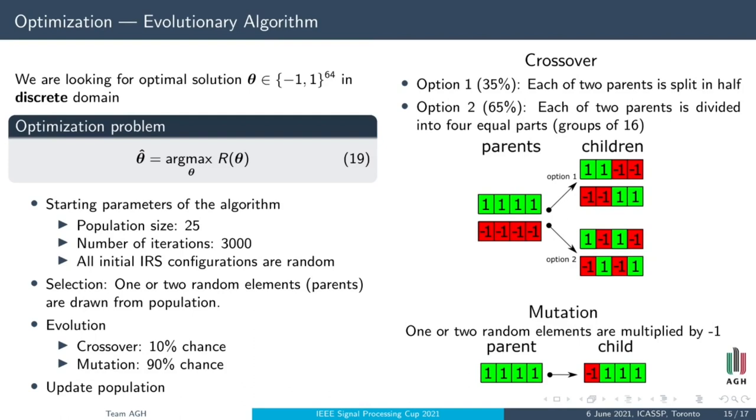Several processes take place during an iteration. Firstly, in a selection, we randomly pick one or two solutions called parents. Based on them, new solutions called children will be created. Secondly, we have evolution. It can be either crossover that needs two parents and occurs only 10% of the time, or mutation that needs one parent and occurs 90% of the time. The goal of crossover is to mix the solutions. It divides parents and combines them together in a different order. Here, 1 or negative 1 symbol represents the state of 16 columns of an IRS. Mutation takes one or two elements from a solution and multiplies them by negative 1, effectively flipping the state of 64 meta-atoms in a column.